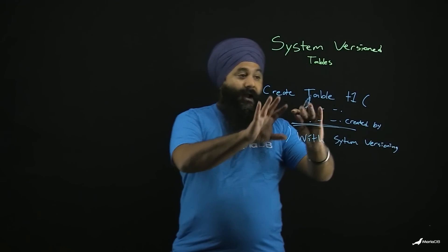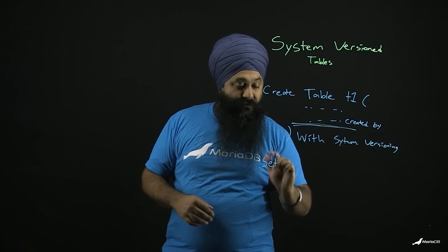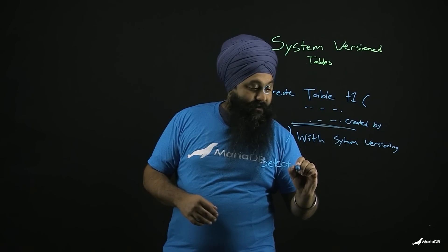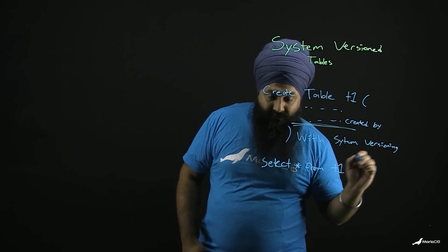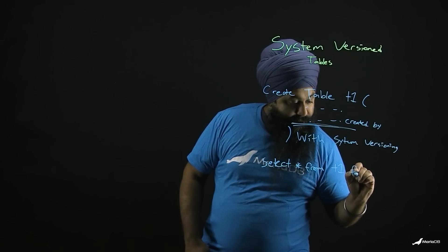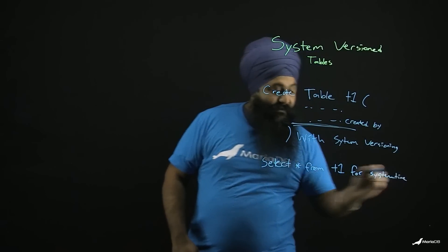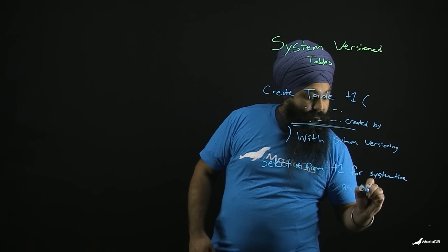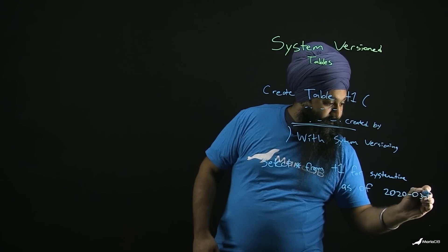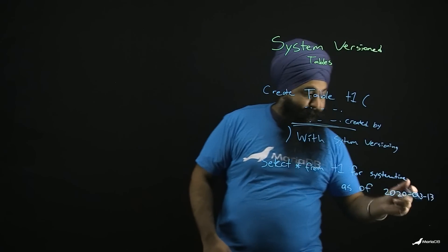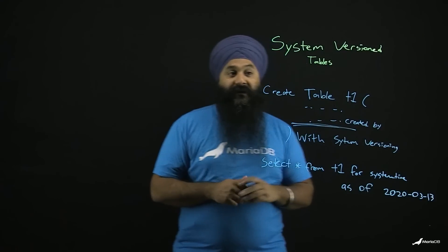Let's give a quick example of how you use it. Let's say we've created this table. Now what you can do is SELECT * FROM T1, but now we're going to say FOR SYSTEM TIME AS OF — I don't know — 2020-03-13. I know that was a fun day for me. You can see what the table looked like on that day: who created that row, what rows were in the table, etc.